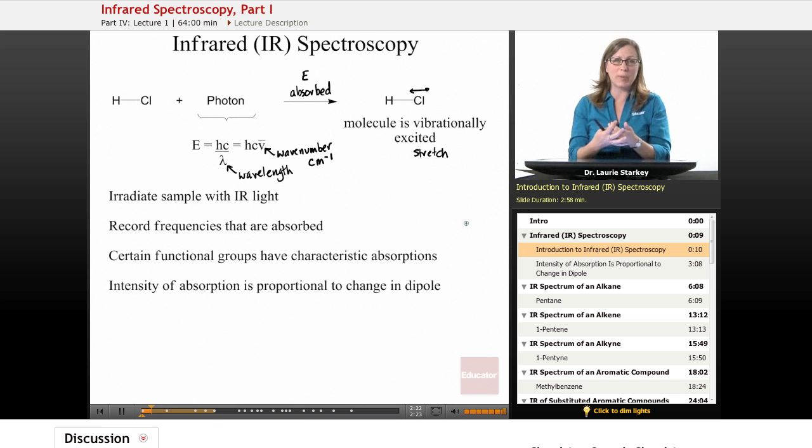Now how can this help us analytically, how can this help us analyze a sample and learn something about its structure? Well, here's what we're going to do. We're going to irradiate the sample with IR light, and we're going to record the frequencies that are absorbed. So we're going to pay attention to which frequencies are absorbed by the molecules and which ones are not, which ones are just transmitted.